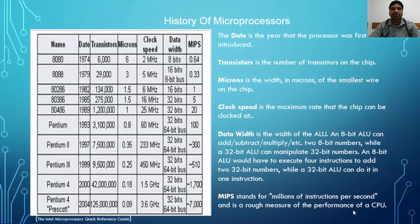In microprocessors, the data width attribute is an important attribute. The data width is the width of the arithmetic logic unit. For instance, an 8-bit arithmetic logic unit can add, subtract, and multiply two 8-bit numbers, while a 32-bit ALU can manipulate 32-bit numbers.